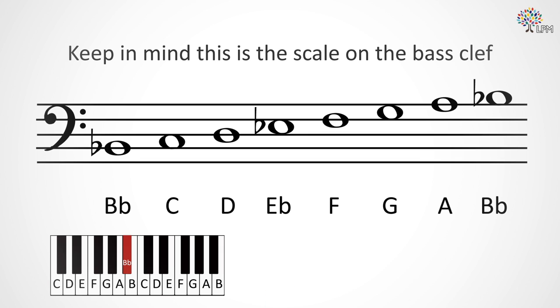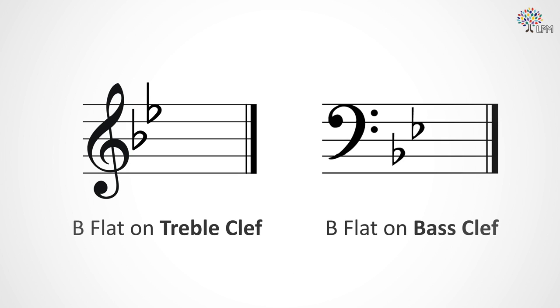So that wouldn't be the right spelling for a major scale. It needs to be Eb so we have some kind of E in there and have the complete list of letter names. Thus, we'll end up with a key signature that looks like this, containing Bb and Eb.